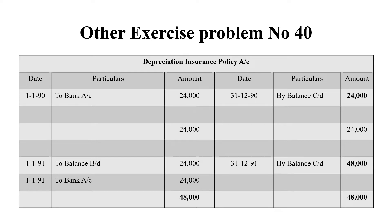In the first entry, we open a Depreciation Insurance Policy Account. The first entry is: Insurance Policy Account debit, to Bank Account — that is 24,000 — because cash is going out from our company. So, to Bank Account is 24,000. The balance carried down is 24,000, and the grand total on both sides is 24,000.